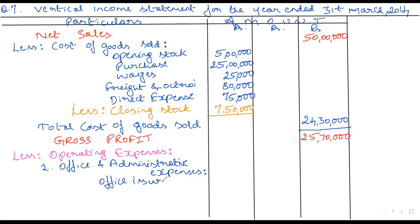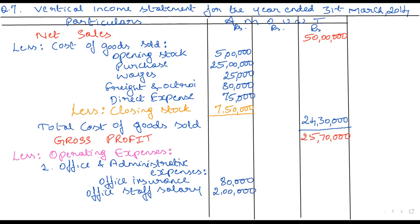Office insurance: 80,000. Office staff salary: 2 lakh. Then we are having general manager salary and staff welfare expenses. General manager salary is 50,000. Staff welfare expenses: 40,000.